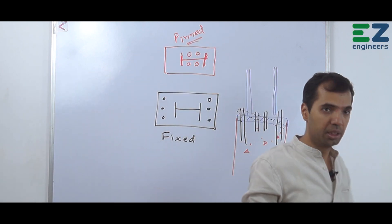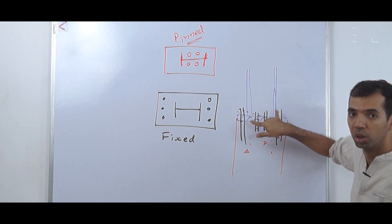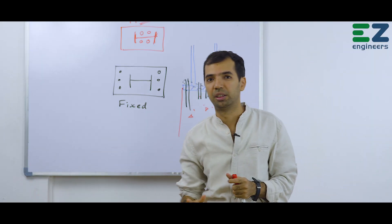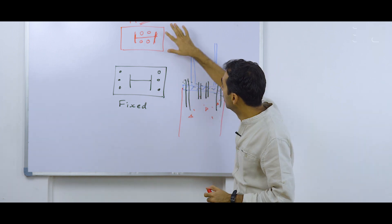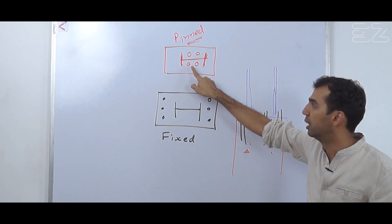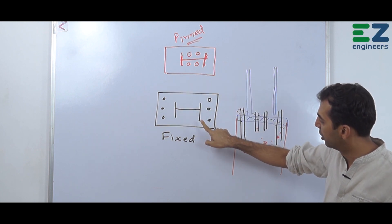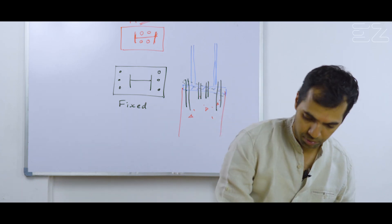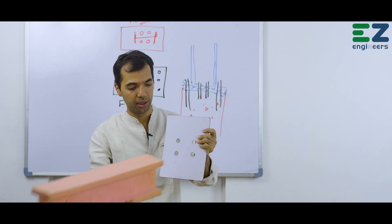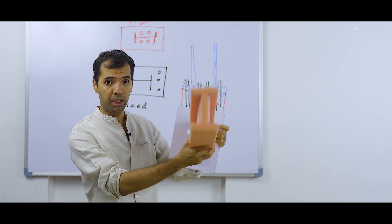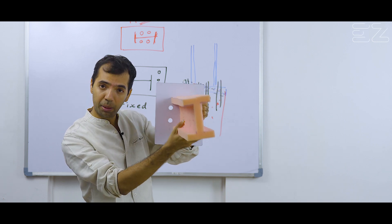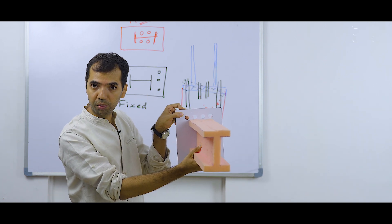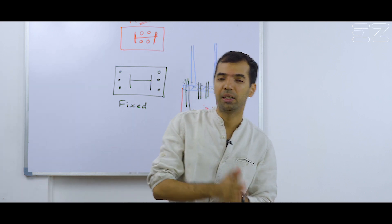By putting anchor bolts here we allow just a small rotation — just a fraction of radians. So if you see the anchor bolts are inside, it will be called a pin support, and if the anchor bolts are outside it will be a fixed support. With this model: this is the base plate, this is the column — this one is the pin support, and this one is the fixed support. Now you know which is pinned and which is fixed.